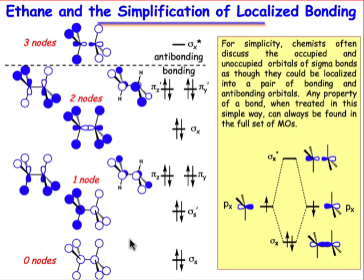The lowest energy molecular orbital has zero nodes. It combines the 2s orbitals on carbon constructively with the 1s orbitals on each hydrogen atom. Next above that, we're still using hydrogen 1s and carbon 2s, but now we've created a node right between the two carbon atoms. This one-node orbital is higher in energy — it's a σs' — and it's still mostly bonding.